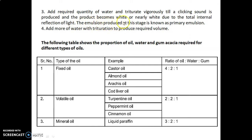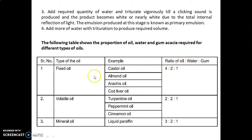The emulsion produced at this stage is known as the primary emulsion. Then add more water with trituration to produce the required volume. The proportion of oil, water, and gum acacia required for different types of oils: fixed oils (e.g., castor oil, almond oil, arachis oil, cod liver oil) — ratio 4:2:1.